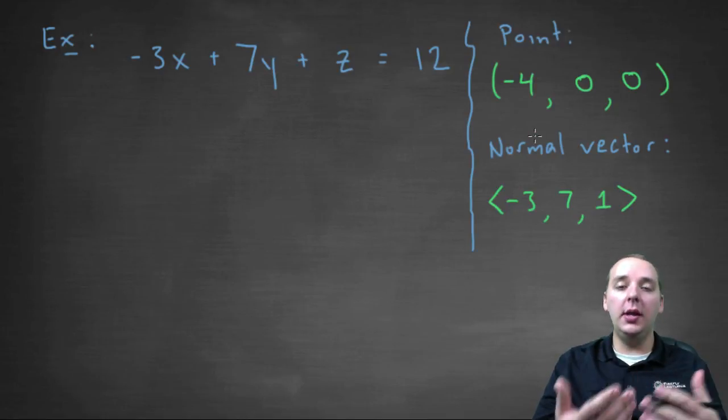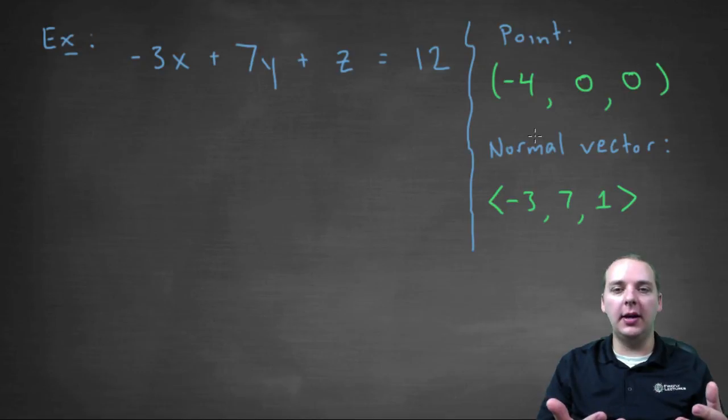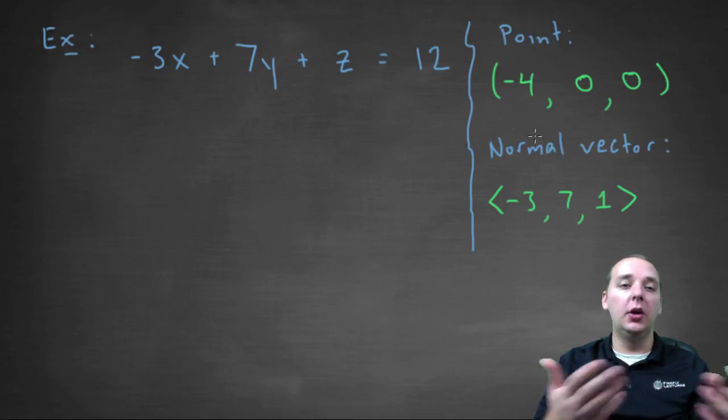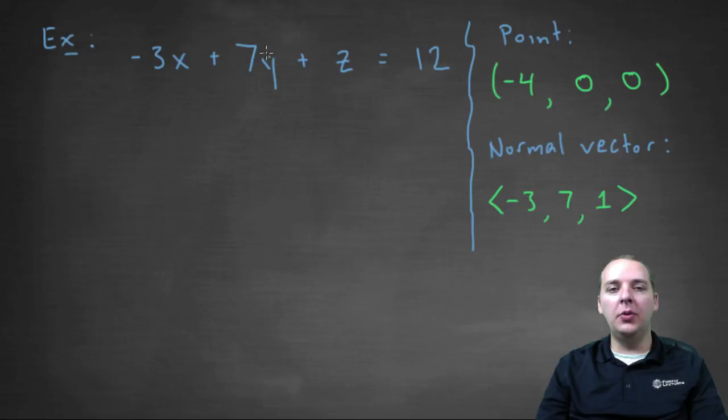So this is one point in the plane. There are many, many others that could also be the right answer, but this is just one. You could also have zero, zero, twelve, because that would equal twelve as well. You could have all sorts of different combinations of X's, Y's, and Z's that would make the equation equal twelve.